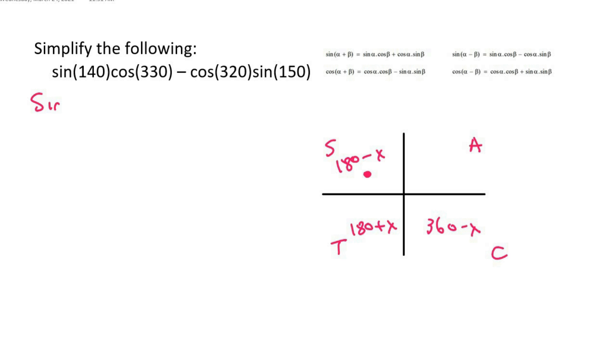So we should remember that sin 140 would eventually turn into sin 40. You might have to pause the video and just see if you can remember that from last year. Cos of 330 will eventually just turn into cos 30. Cos of 320 will just become cos 40, and then sin of 150 will eventually turn into sin 30.